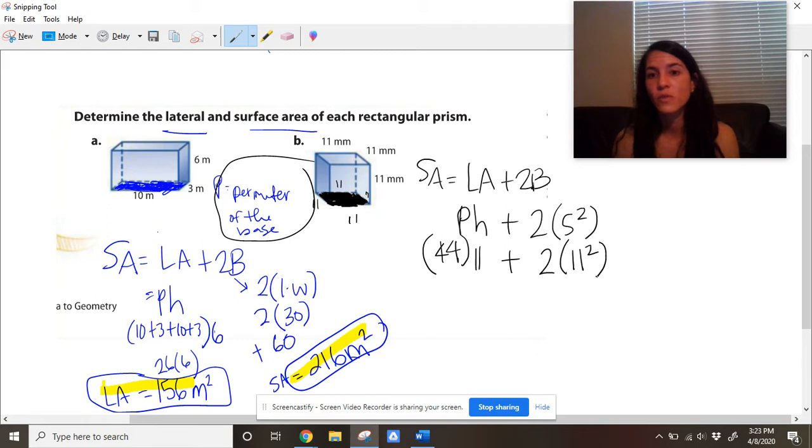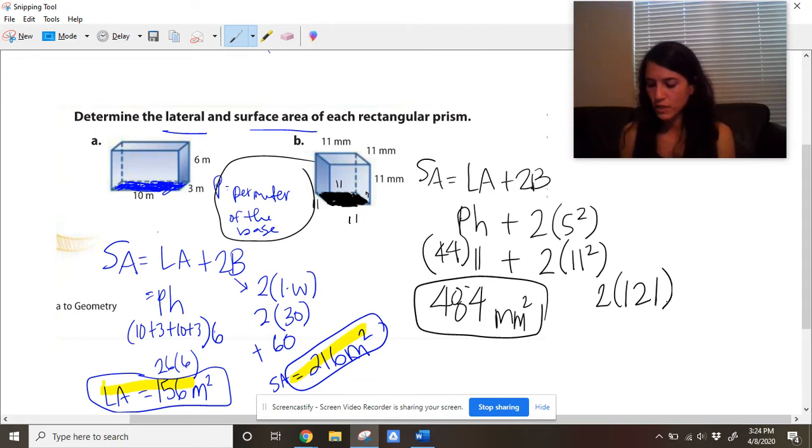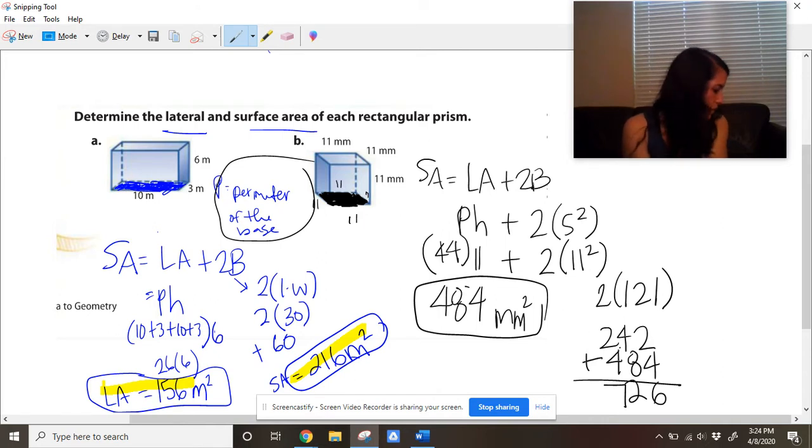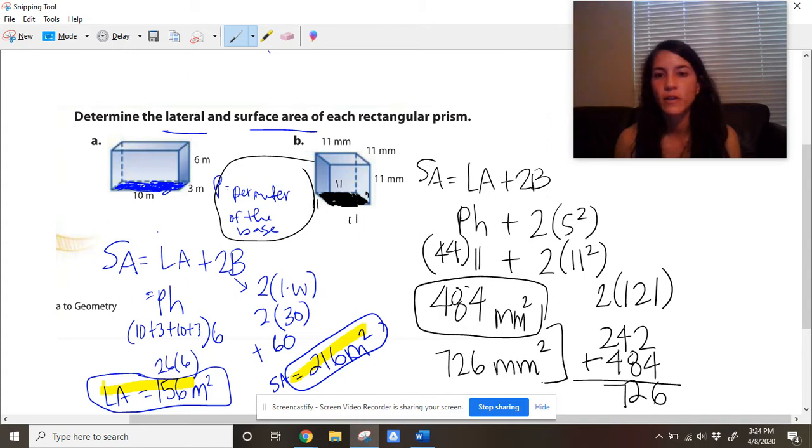And then side squared would be 11 squared. 44 times 11, 484 is the lateral area. 484 millimeters squared is the lateral area. 2 times 11 squared. 11 squared is 121. 121 times 2, so that's going to be 242. 242 plus 484 is 726. So the total surface area is 726 millimeters squared.